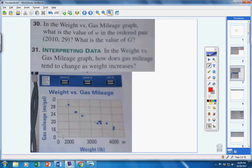Problems 30 and 31 we're going to use the scatter plot here, it's the weight versus the gas mileage. What is the value of W in this ordered pair? Stop and think. This is your x-axis, it's the weights, we're going to call it the W-axis. This is usually your y-axis, we're calling that our g-axis.